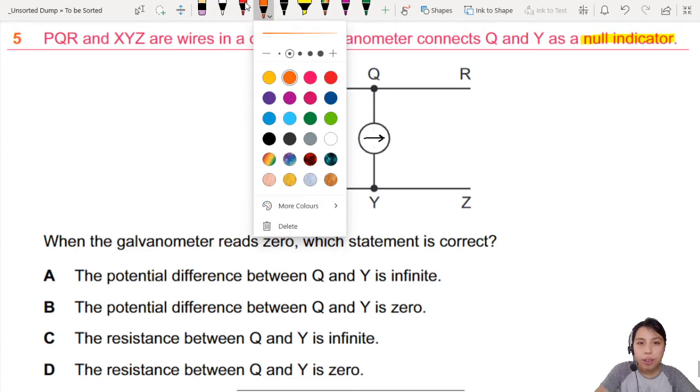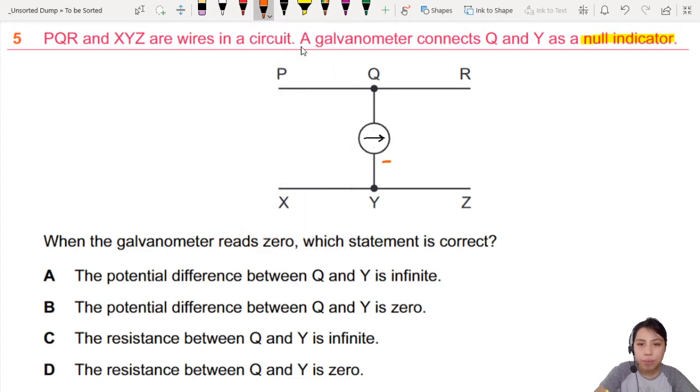So I'm going to write a note here for no current flowing through the meter. There may be current flowing through up here and current flowing through down there, I don't know, but there's nothing flowing through the bridge.